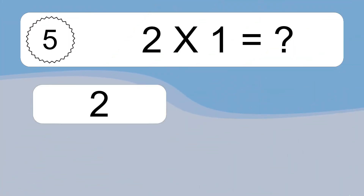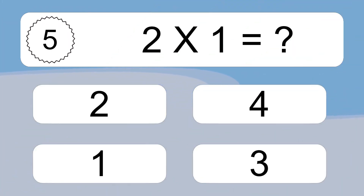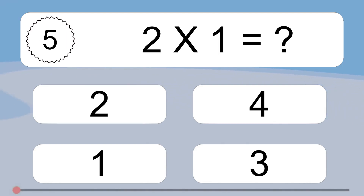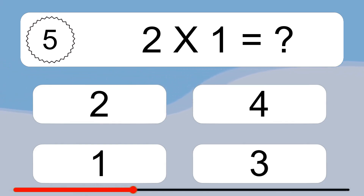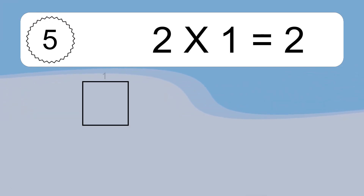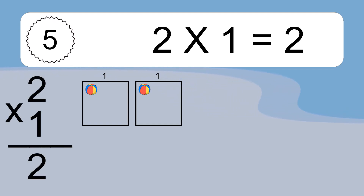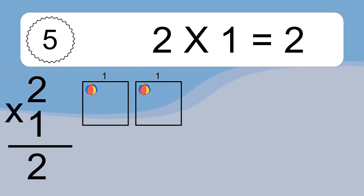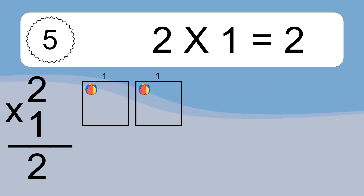2 times 1 equals what? 2 times 1 equals 2. We have 2 boxes, and each box has 1 colorful ball inside. If you count all the balls in all the boxes together, you will have 2 times 1 balls. This equals 2 balls.